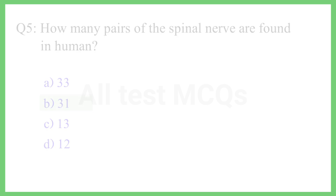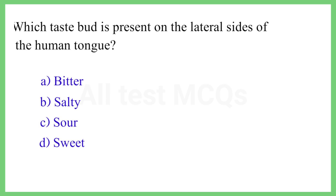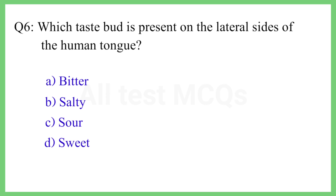Question No. 6. Which taste bud is present on the lateral sides of the human tongue? The correct answer is Option C: Sour.